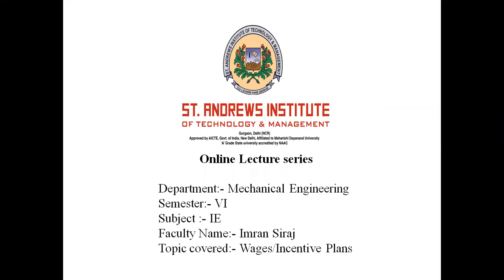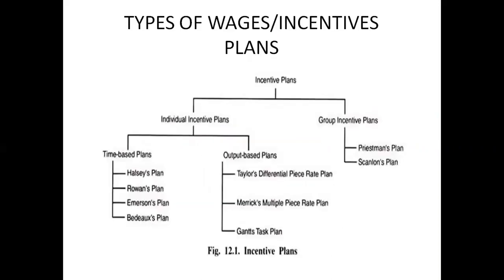So far we have studied the basics of industrial engineering, different types of factors, different activities, objectives, and how we improve the working of industries and other modules. In the last two lectures we talked about incentives and wages paid to workers. Wages are the monetary benefits paid to workers, and incentives are the financial benefits given to workers who perform more than required. Wages and incentive plans are divided into two sections — individual and group.